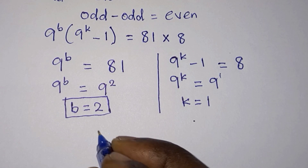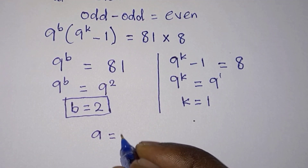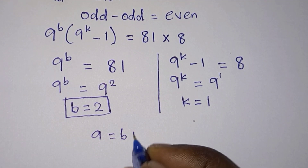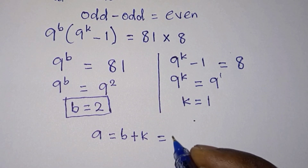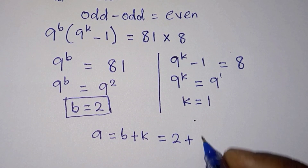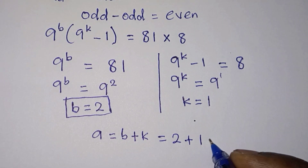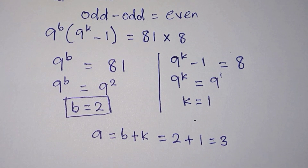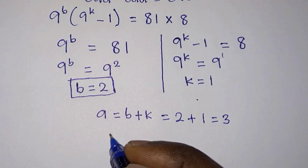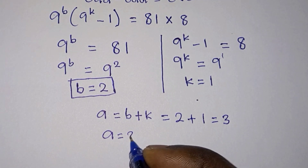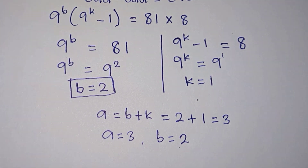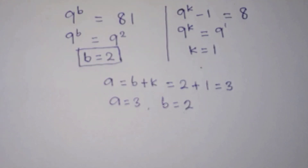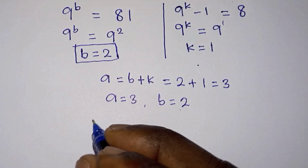We know that a equals b plus k, where b is 2 and k is 1, so a equals 2 plus 1, which is 3. Therefore a equals 3 and b equals 2. Let's go ahead and verify this answer.